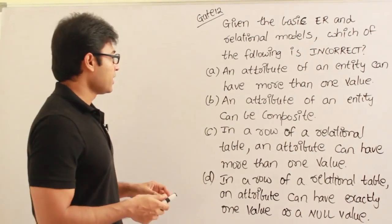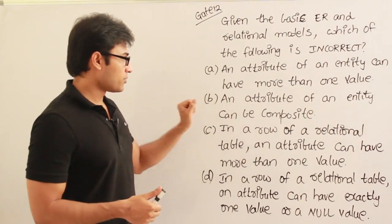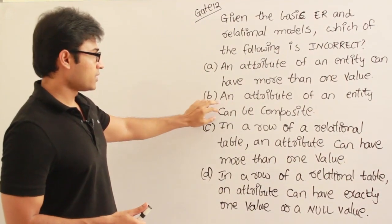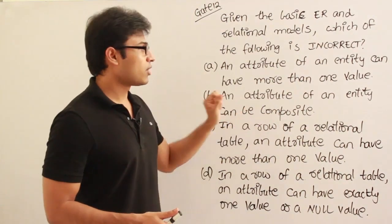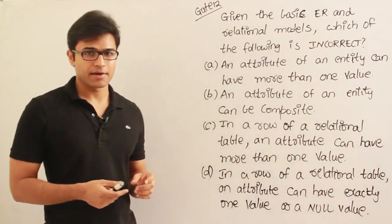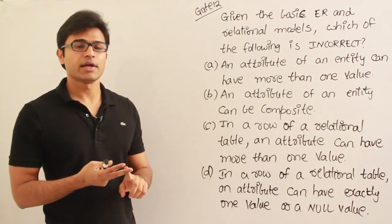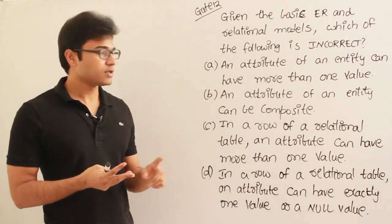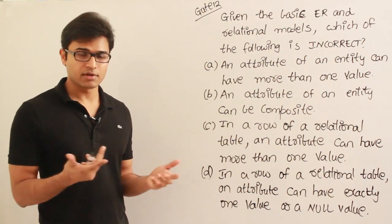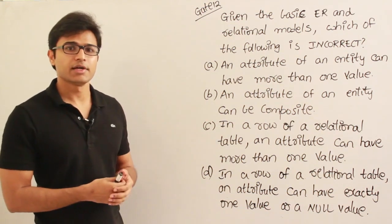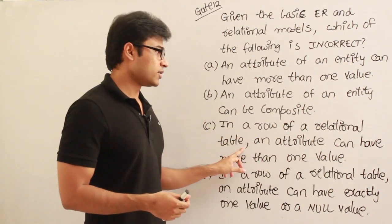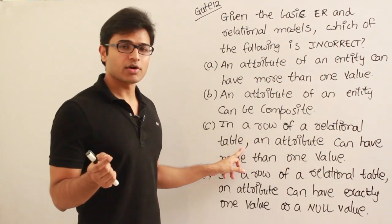So the first option is correct. The second option says an attribute of an entity can be composite. In the ER model, attributes can be simple, derived, composite, multi-valued, or complex — these are the various types of attributes in the entity model. So this option is also correct.